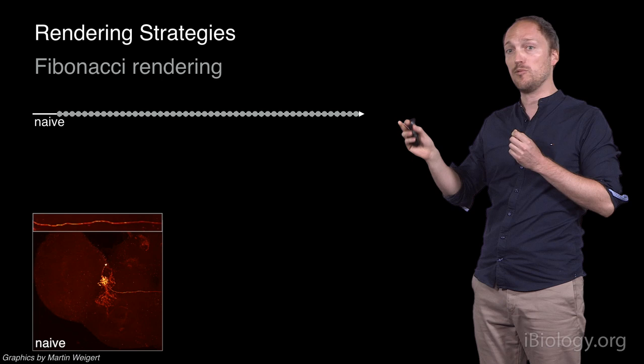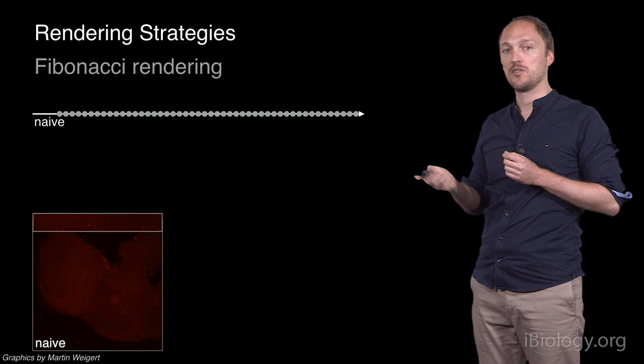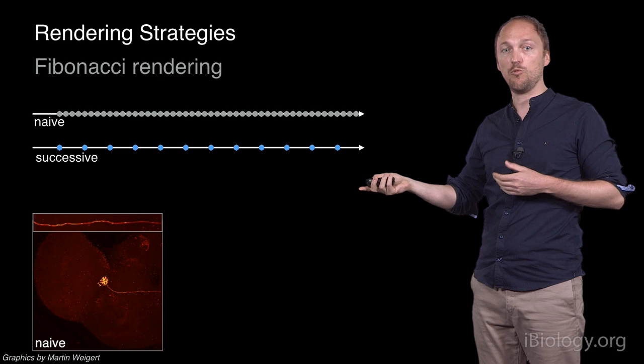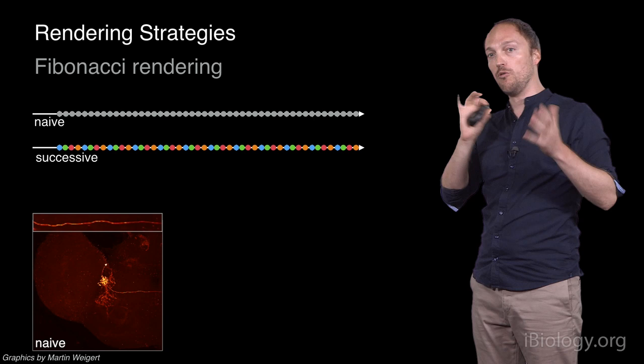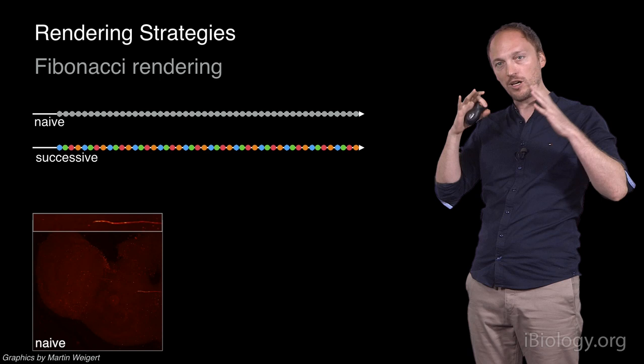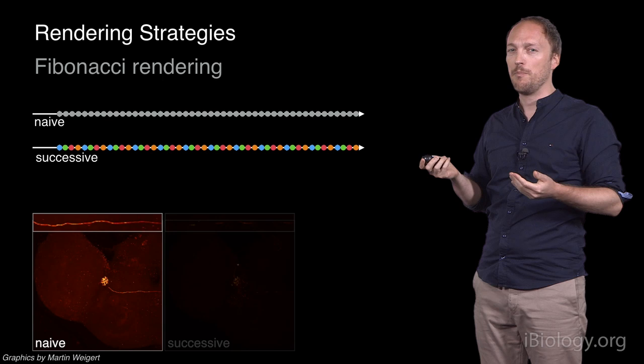A better approach is to have a multi-pass rendering algorithm, where you do multiple passes, collecting a fraction of the information, and progressively you refine the image. And so, the next thing to do is then to maybe skip every... to only collect the information every four voxels, as shown here. And you do it once, and then again, and again, and again. And so, while you rotate your sample, you only show a fourth of the information, in some sense. And then when you stop rotating, you stop interacting with your dataset, you can then refine and then complete the image to have a full image quality rendering. Right? So, that's a successive approach.